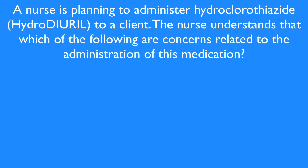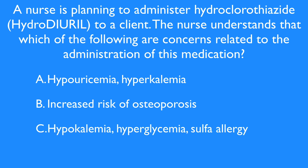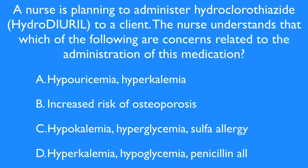Let's review an NCLEX-style question. A nurse is planning to administer hydrochlorothiazide to a client. The nurse understands that which of the following are concerns related to the administration of this medication? Option A: hypouricemia and hyperkalemia. Option B: increased risk of osteoporosis. Option C: hypokalemia, hyperglycemia, and sulfa allergy. Option D: hyperkalemia, hypoglycemia, and penicillin allergy. If you know the right answer, leave it in a comment below along with a brief description explaining why you picked that answer.